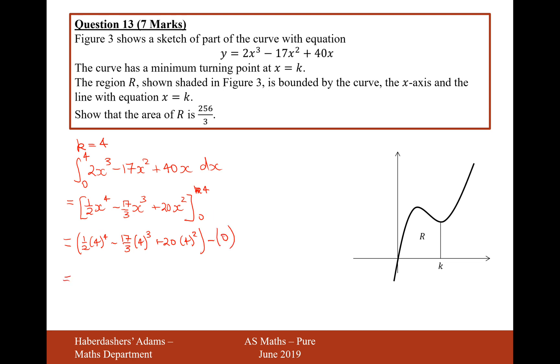So, let's now work out each of these individually, and then we'll show that it all sums together to give us 256 over 3. So, the first bit is going to be 128 minus 4 cubed times 17 over 3. That will give us 1088 over 3, and then plus 16 times 20, that will give us 320.